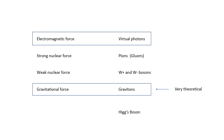For the electromagnetic force, the boson is the virtual photon. For the strong nuclear force, according to AQA, it is carried by pions — though within a proton or neutron it's actually carried by gluons, but we don't need to know about gluons. The strong nuclear force is carried by pions. The weak nuclear force is carried by W plus and W minus bosons. For the gravitational force, there is a theory that there is a boson called the graviton, but it hasn't been discovered yet, so you don't need to know it.